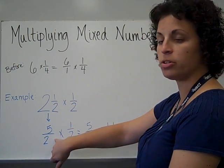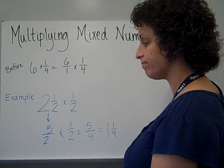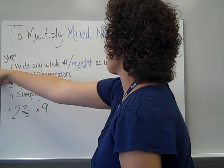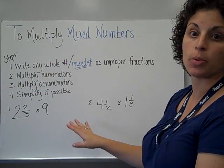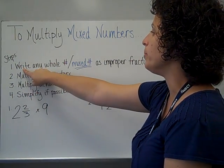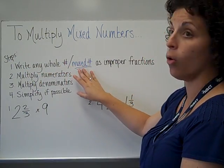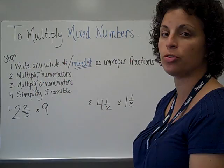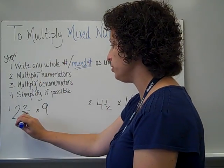So the extra step is to turn this to an improper fraction. These are the directions that we used before. The only difference is, for step number 1, write any whole number or mixed number as an improper fraction, and then we continue to follow the same steps. So, looking here...